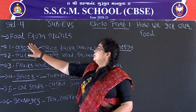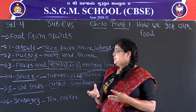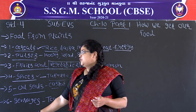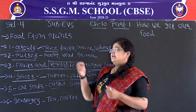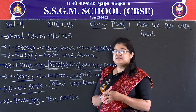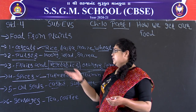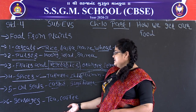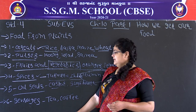So here our first topic — food from plants — is complete. All the subtypes we covered are included in this category. Almost everything we eat in daily life — cereals, pulses, fruits, vegetables, spices, oil seeds, and beverages — all come from plants or trees.